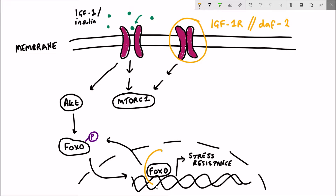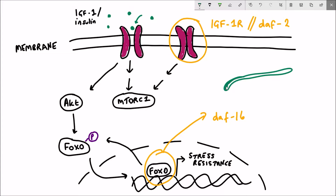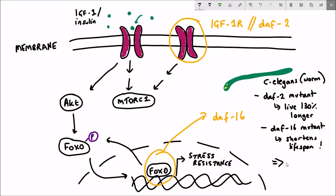Two key genetic mutations that strongly affect aging are seen in the IGF1 receptor — also known as DAF-2 in C. elegans — and FOXO, also known as DAF-16 in C. elegans. When DAF-2 is mutated it prolongs lifespan, whilst when DAF-16 is mutated it reduces lifespan and hence promotes aging.